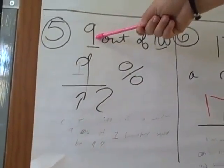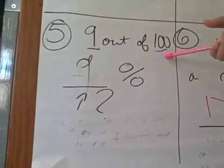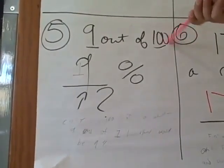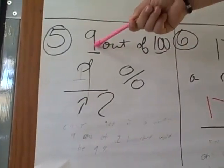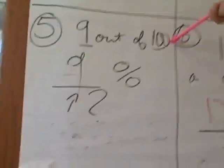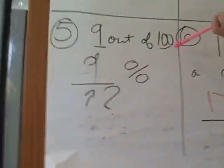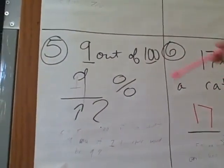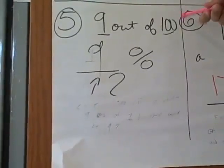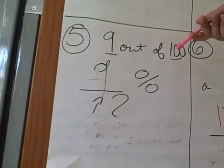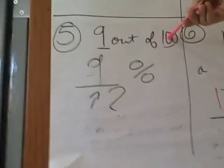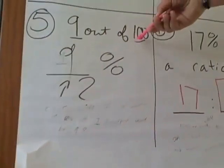Right now we're seeing 9 out of 100 as a percent. So what you have to do technically, since 100 is a whole — kind of like 1 — 9 out of 100 would be 9%. And the way we got that was, since 100 is a whole, 9 out of 100 would be 9% because 100 is a whole.